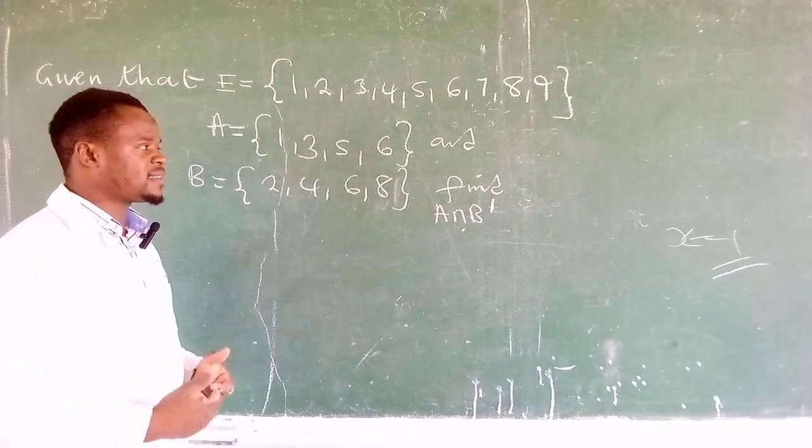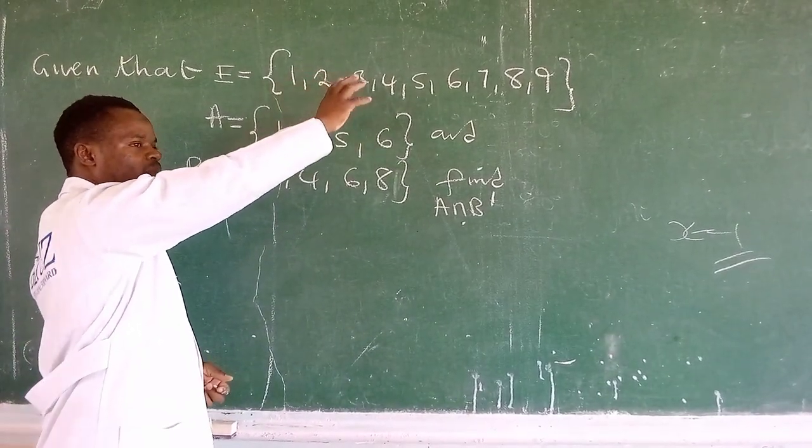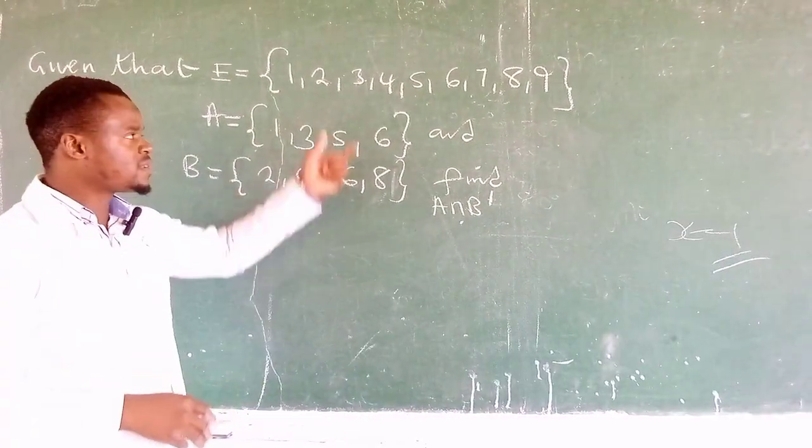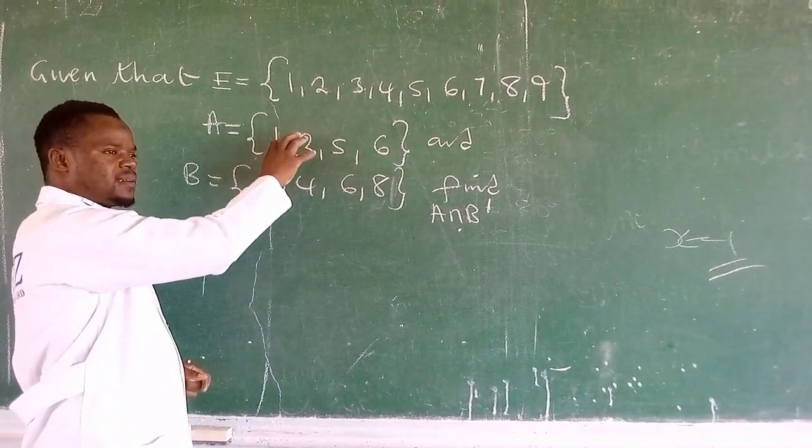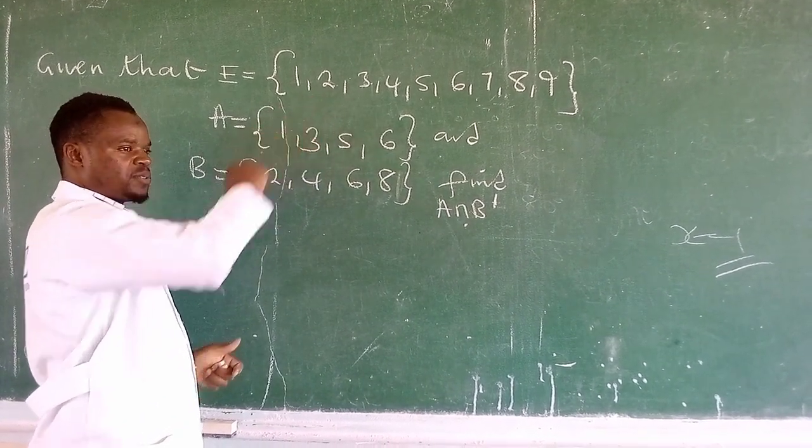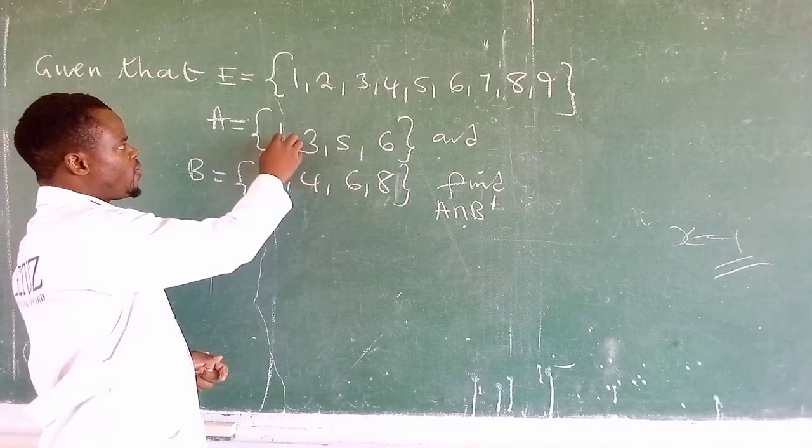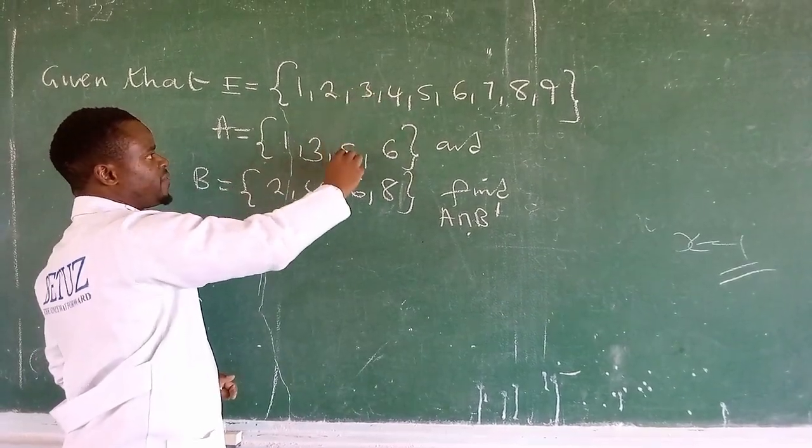This is the universal set and we have to pick the members of set A and set B from the universal set. So if we counter check: 1 is there in the universal set, 3 is there, 5, 6... these as well are there in the universal set.